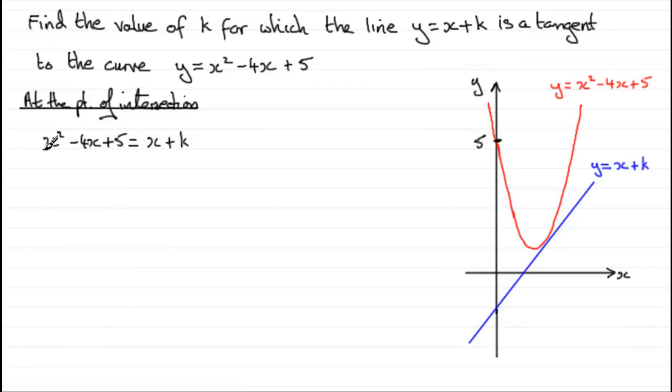We've got a quadratic equation because of the x squared, so we need to rearrange it and make it equal zero. If we subtract x from both sides and subtract k from both sides, we get x squared minus 5x plus 5 minus k equals zero.